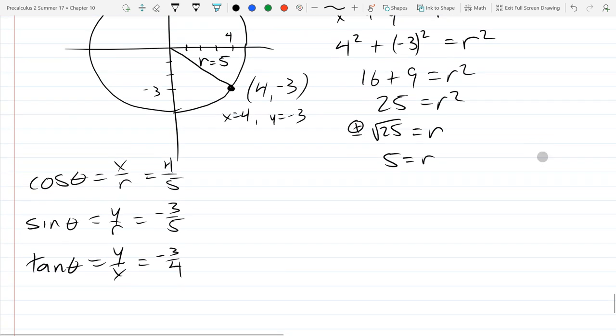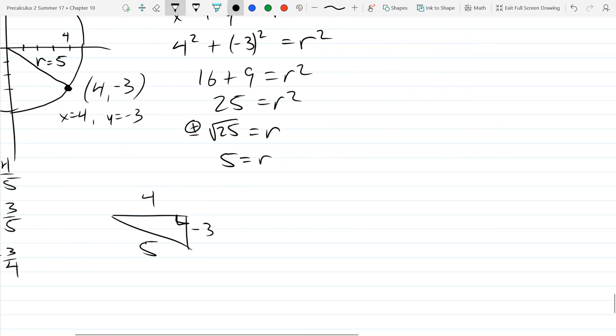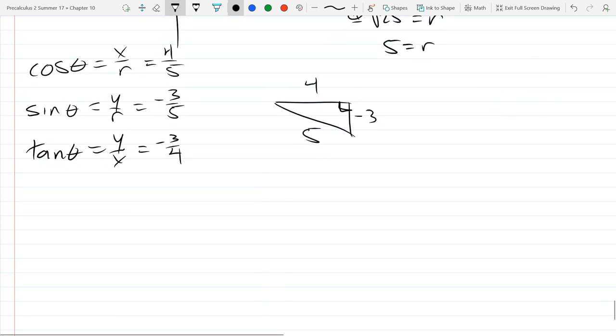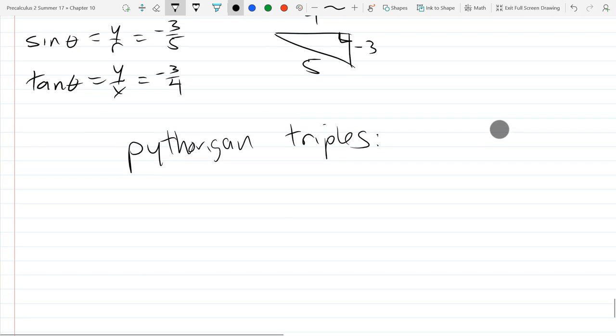This triangle is pretty famous—this is the 3-4-5 triangle. Well, technically this is a -3, 4, 5 triangle, but this is a very common right triangle. They call these Pythagorean triples. The common one is 3² + 4² = 5².